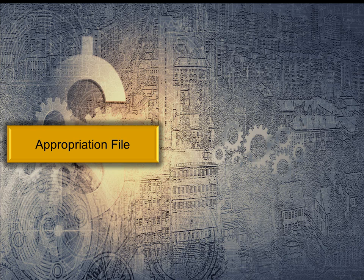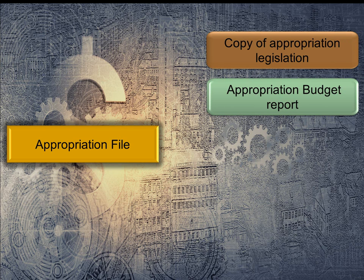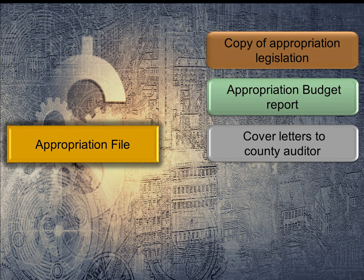Now let's discuss the appropriations file. The auditor is going to need to confirm that your board adopted appropriation legislation and it's what you entered in your bookkeeping as appropriation budgets. In order to pull these pieces together for easy access during your work year and for audit, I recommend you create an annual appropriation file. In the file, you always place a copy of all appropriation legislation. The original, of course, will be kept with the adopted legislation. Keep a copy of the appropriation budget report to verify the figures of the legislation match your software entries. Include all cover letters to the county auditor sending a copy of the legislation.